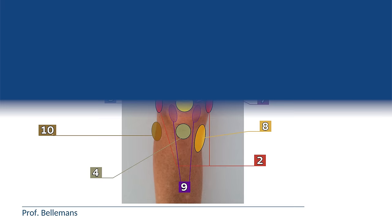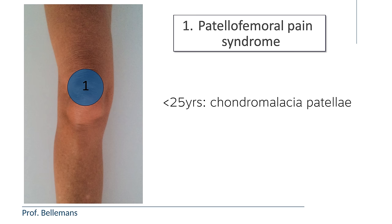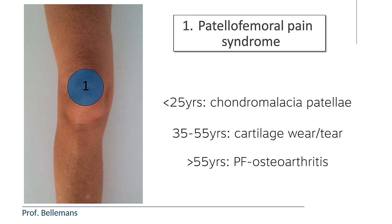1. Patellofemoral pain syndrome, also called anterior knee pain syndrome, because the pain is located in front of the knee at or around the kneecap. It is almost always caused by a cartilage problem under the kneecap, which depending on your age could be either because your cartilage is too soft — we call that chondromalacia patellae — or because of wear and tear of the cartilage induced by intensive sports or heavy labor, which at an older age is called patellofemoral osteoarthritis.